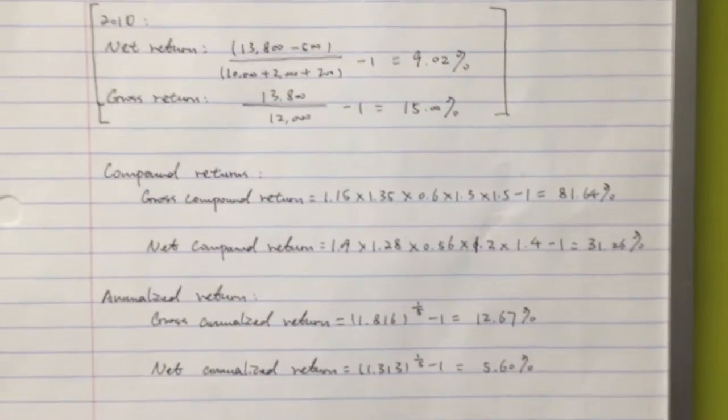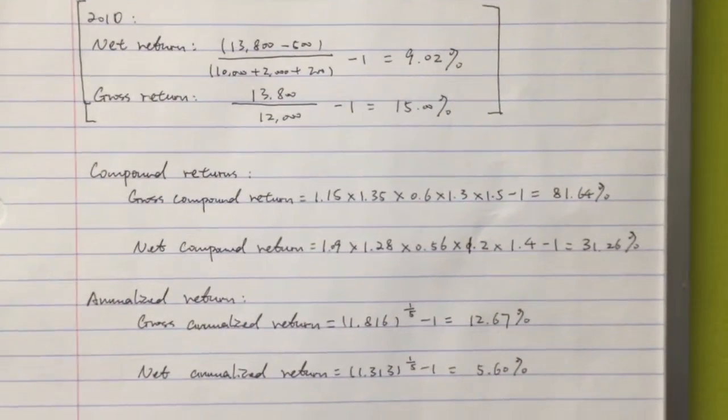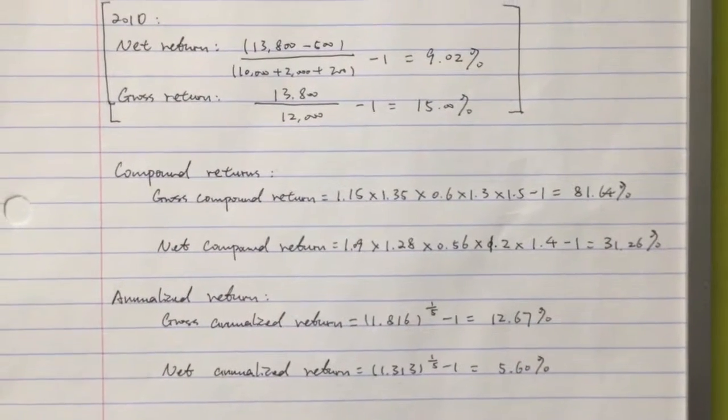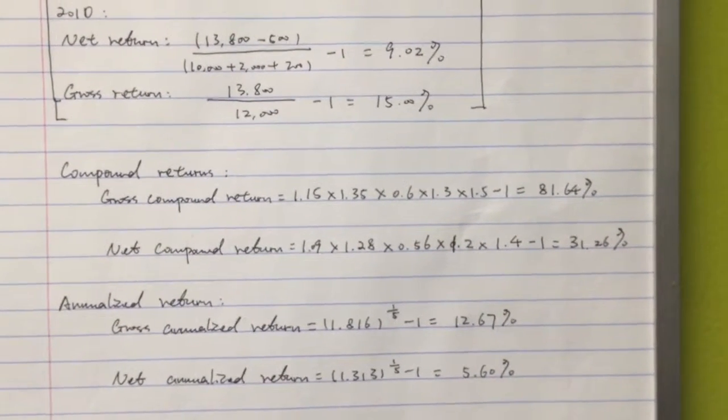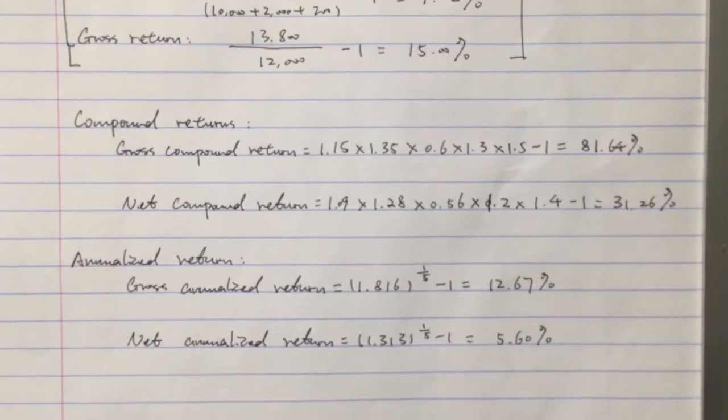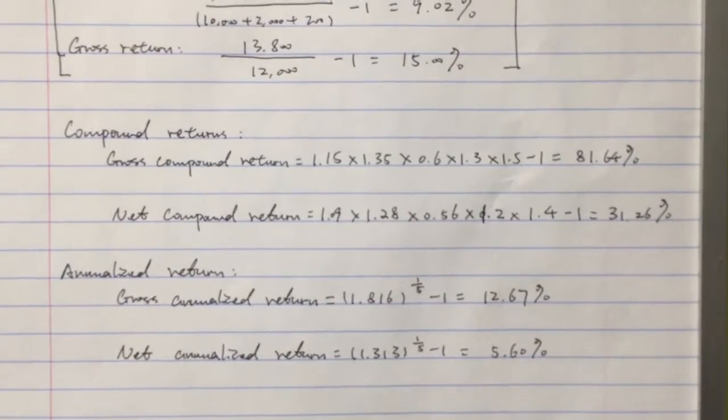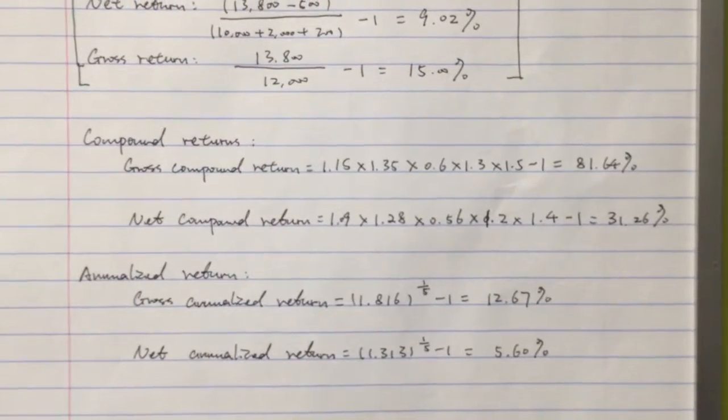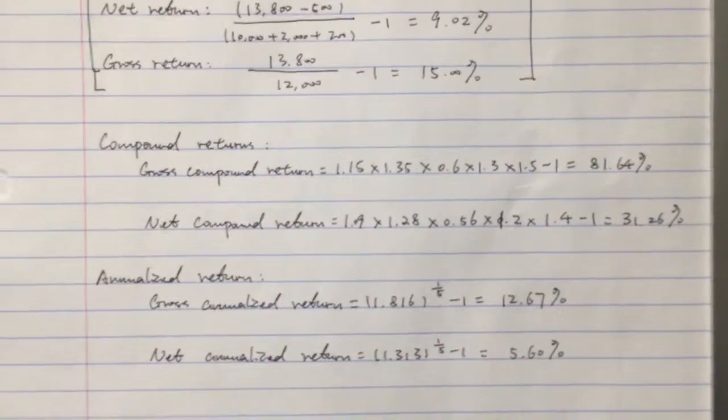So to calculate the compound return, we just multiply them up and minus one. To annualize it, we raise the result from last question to the one-fifth power and minus one.